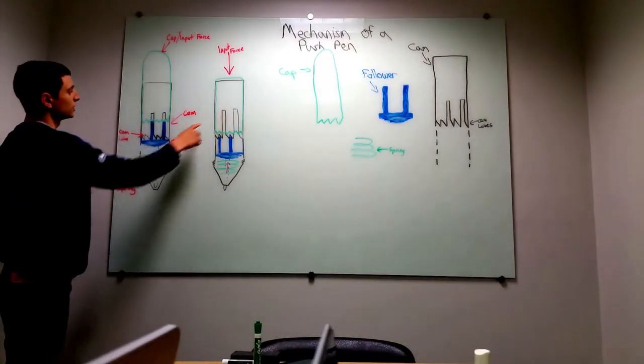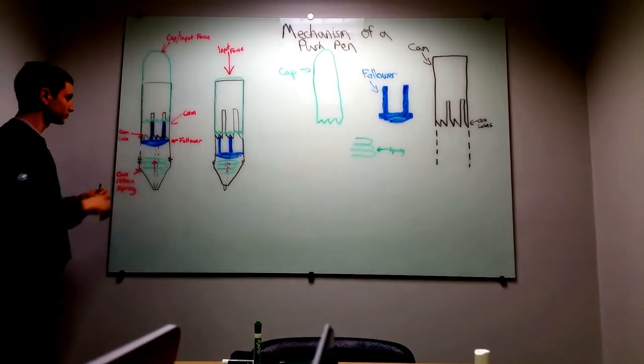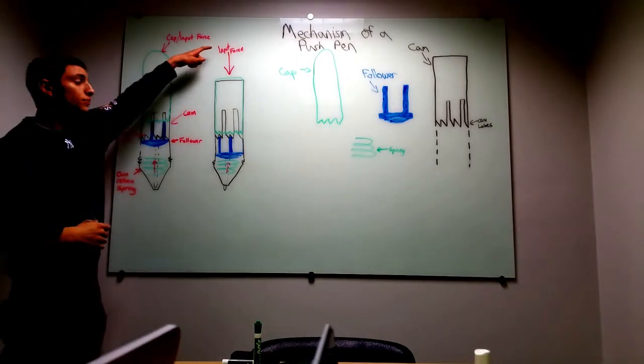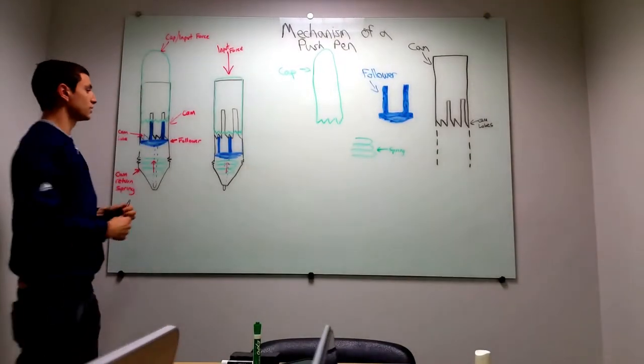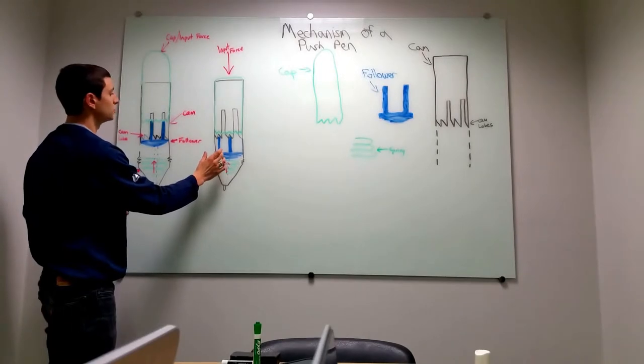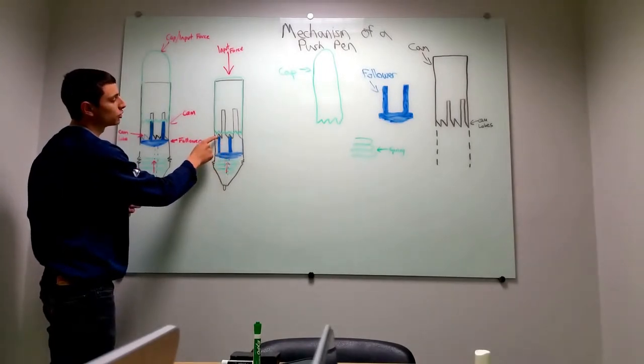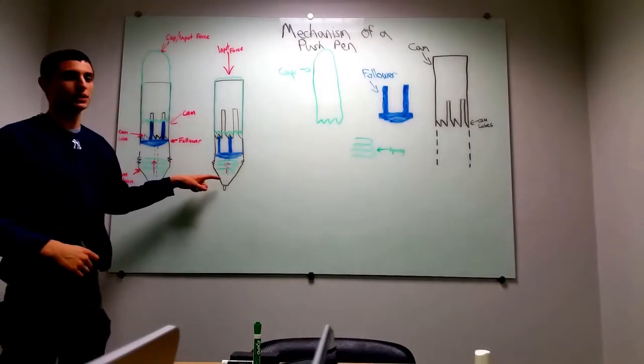The cam lobes allow the follower to go fully up in its position. When an input force is pushed down onto the cap, this causes the follower to be pushed down and for it to get caught on the cam lobes, which are lowered down. This, in return, pushes the pen tip down.